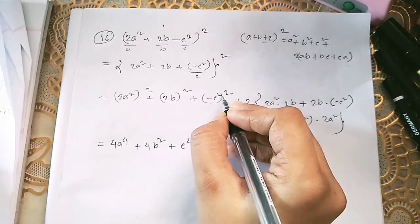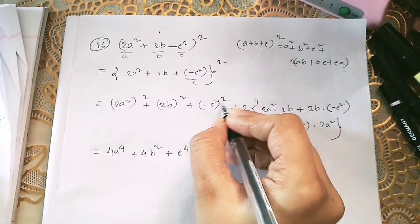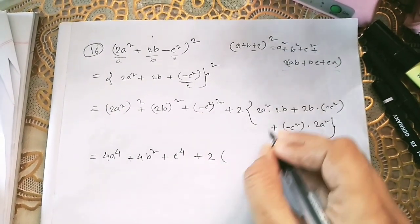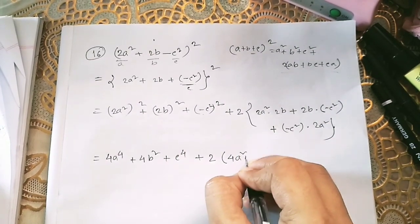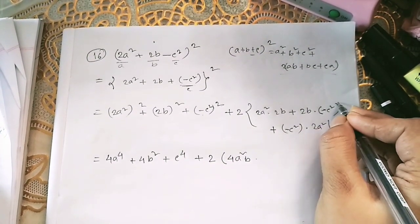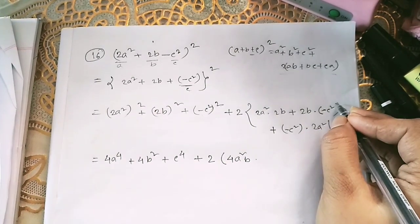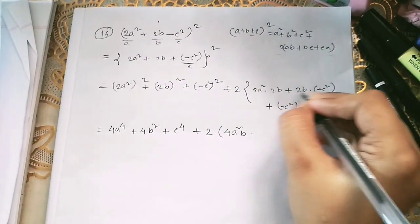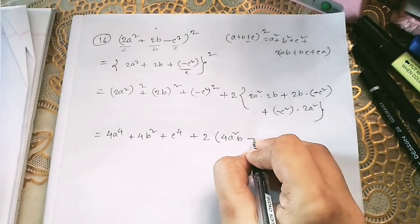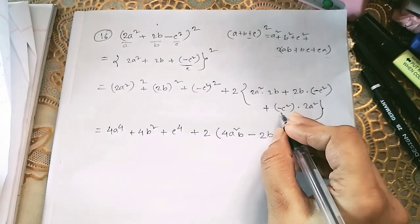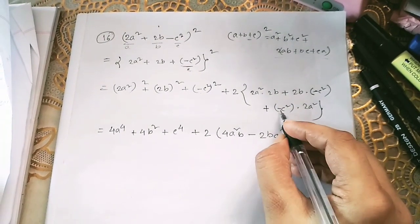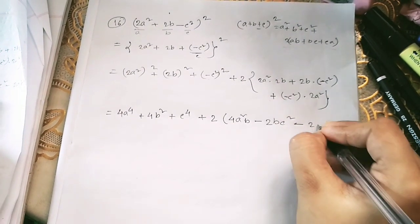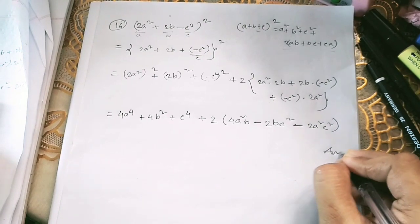If we take the square of any negative term it becomes positive. The next terms: since -c² has power 1, -c² remains negative. So 2·(2a²)·(2b) gives +8a²b, then 2·(2b)·(-c²) gives -4bc², and 2·(-c²)·(2a²) gives -4a²c². So the full answer is 4a⁴ + 4b² + c⁴ + 8a²b - 4bc² - 4a²c².